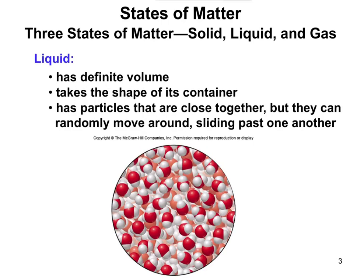A liquid also has a definite volume. Whenever you think of volume, a lot of times you think of a liquid — like a 500 milliliter bottle of water or a gallon of milk. Those are volumes. Liquids take the shape of their container, so if you pour milk from a gallon jug into a cup, it changes its shape to fit the container.